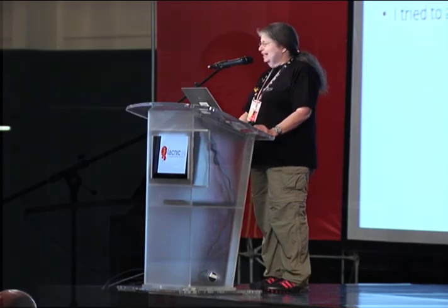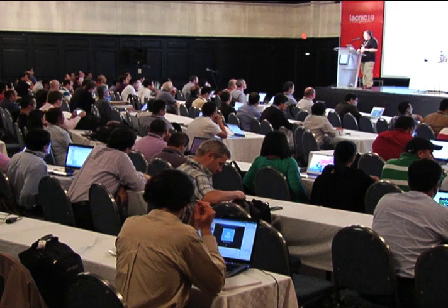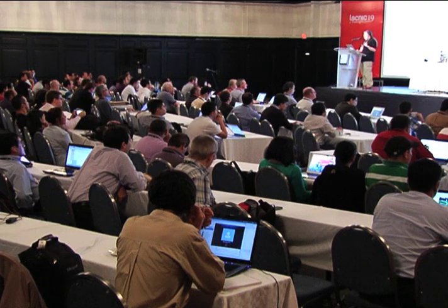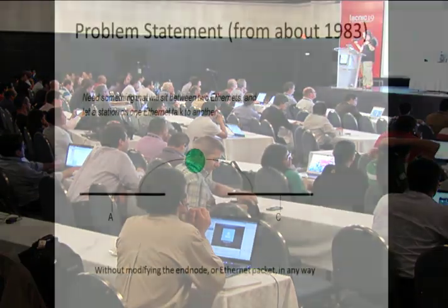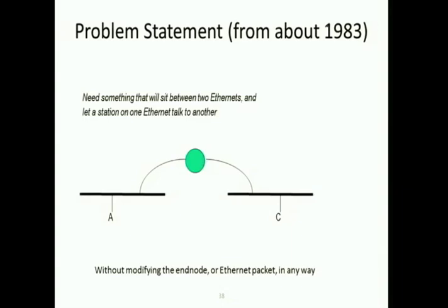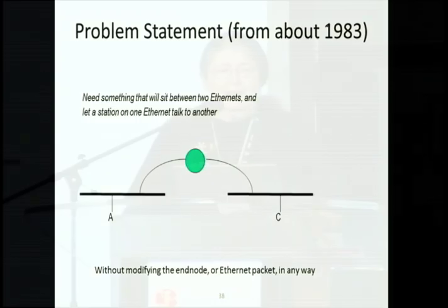And they said, 'Go away Radia, you're just upset because no one needs your layer anymore.' I said, 'But you may want to talk from one Ethernet to another.' They said, 'Our customers would never want to do that.' So here I was in a bad mood when my manager said, 'Radia, we need to design a magic box that sits between two Ethernets and lets someone on one talk to someone on the other.' That would have been a router. But a router only works if the end node is doing the same layer 3 protocol, and we could not modify the Ethernet packet in any way.